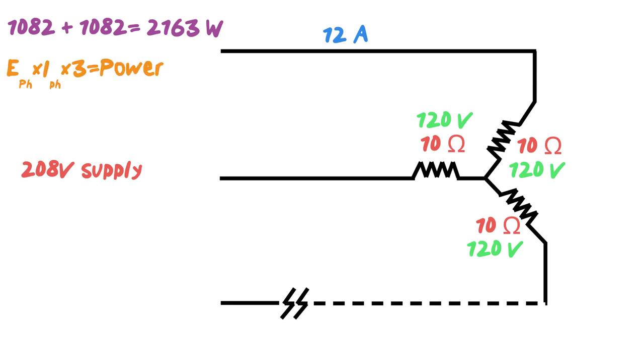So we figured out our voltage. We figured out our current. Now we can figure out our power using this formula. E phase times I phase times 3 equals power. So we're going to do that up, and we're going to see what we get. We calculate that out, 120 times 12 times 3, which is the formula for power in a three-phase circuit, gets us 4,320 watts. So with all three legs now, we get 4,320 watts. When this leg was open, we got 2,163 watts.